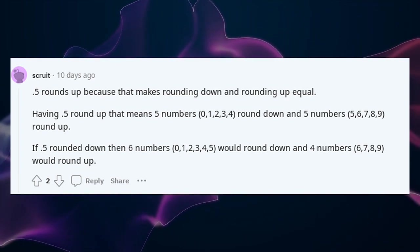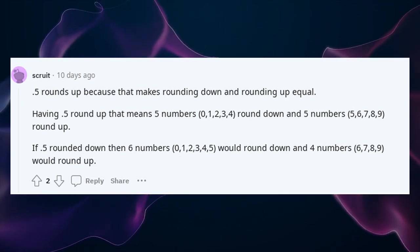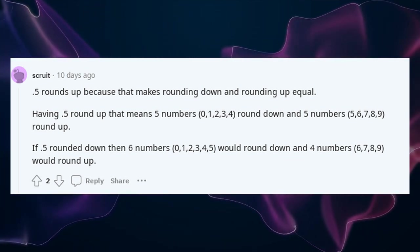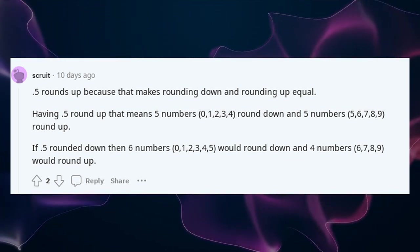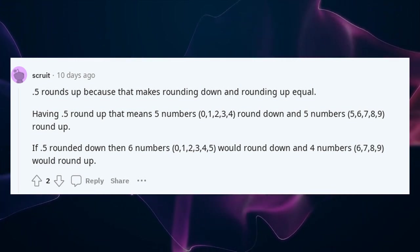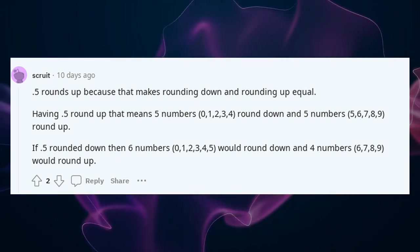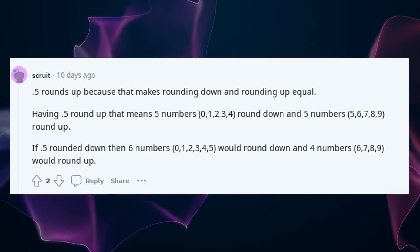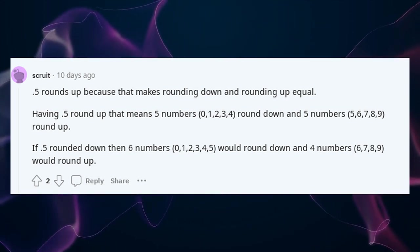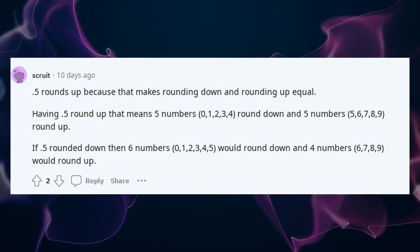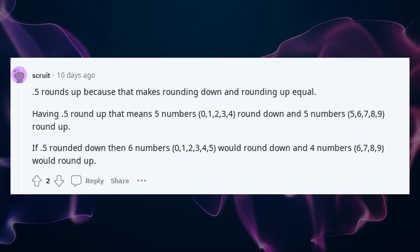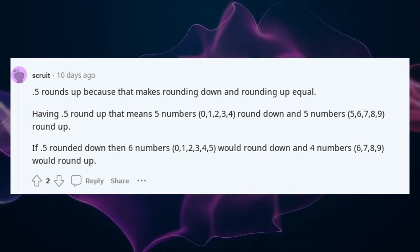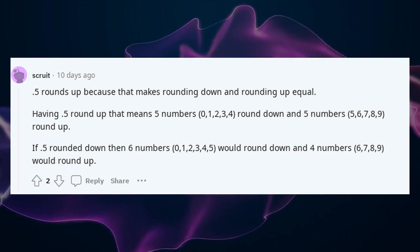Having 0.5 round up means 5 numbers — 0, 1, 2, 3, 4 — round down, and 5 numbers — 5, 6, 7, 8, 9 — round up. If 0.5 rounded down, then 6 numbers — 0, 1, 2, 3, 4, 5 — would round down and only 4 numbers — 6, 7, 8, 9 — would round up.